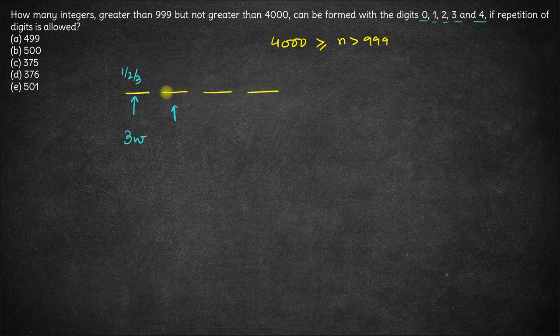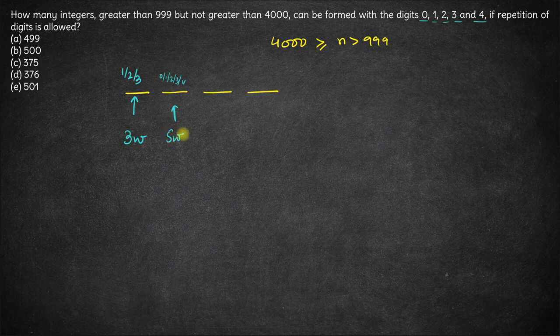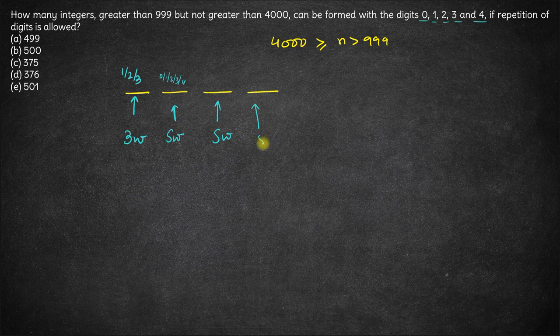Now out of these 5 digits, any digit can come over here: 0 or 1 or 2 or 3 or 4. So this position can be filled in 5 ways. Similarly, this position can be filled in 5 ways and this position can be filled in 5 ways.